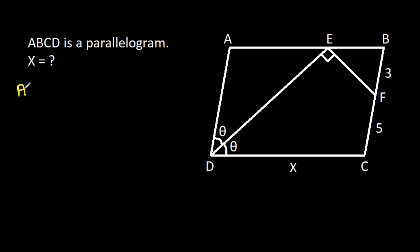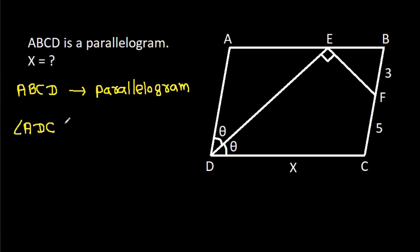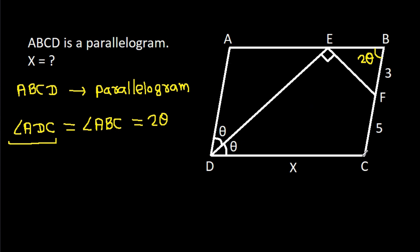ABCD is a parallelogram. That means opposite angles are equal, so angle ADC equals angle ABC. Angle ADC is theta plus theta, that is 2 theta. So angle ABC will also be 2 theta. And opposite sides AD and BC are equal. BC is 3 plus 5, that is 8. So AD will also be 8.